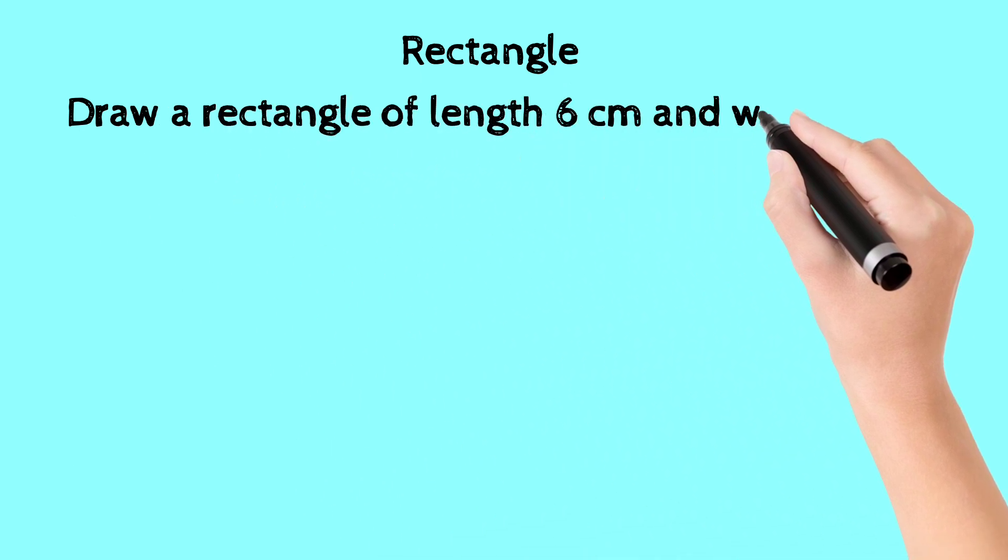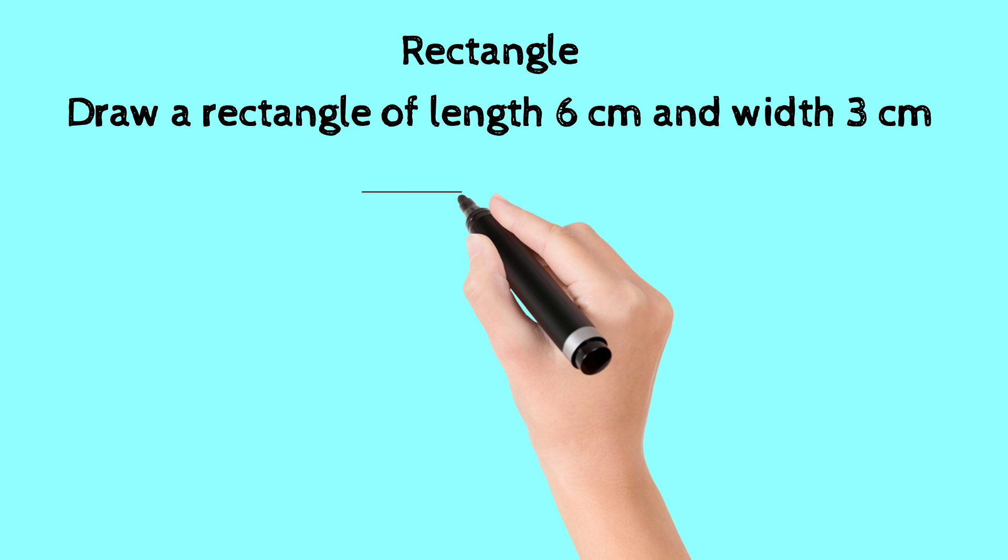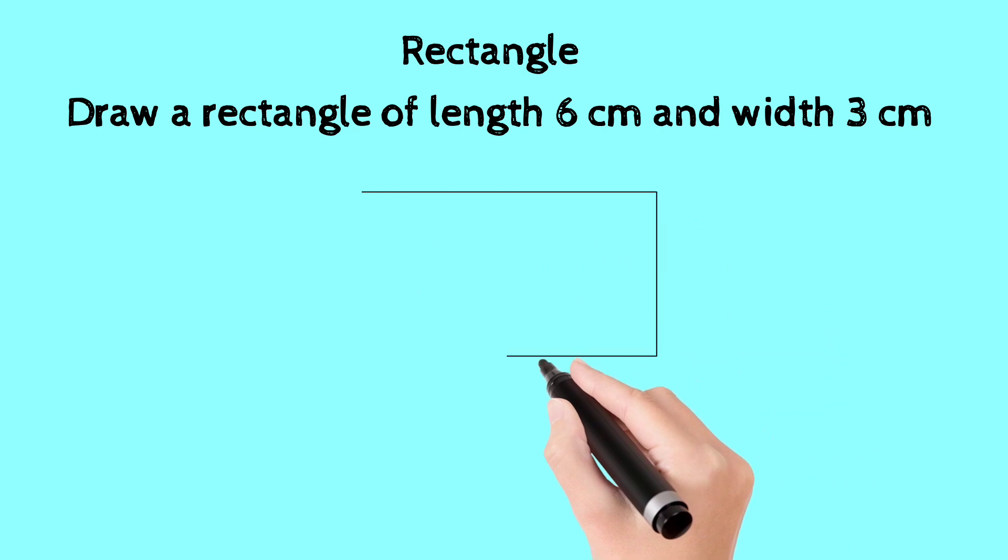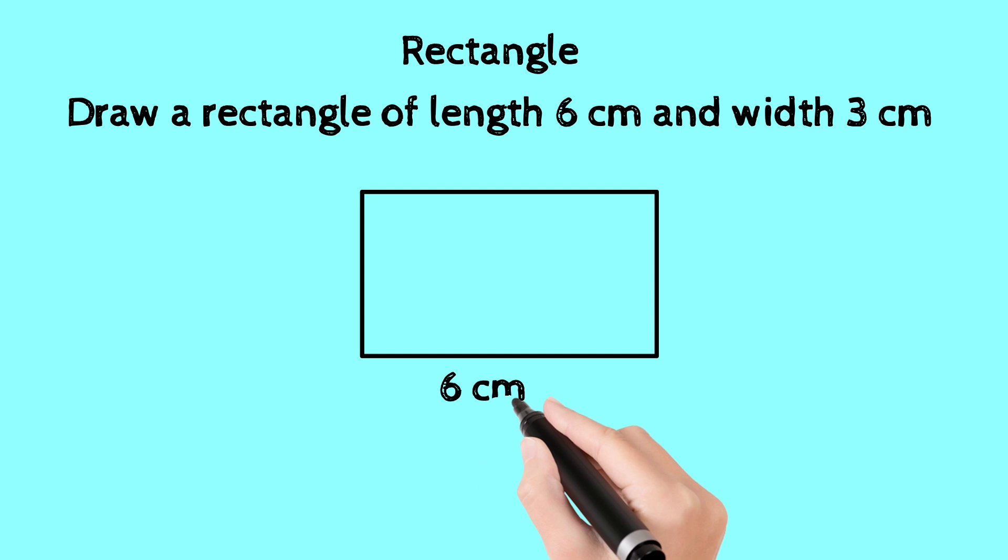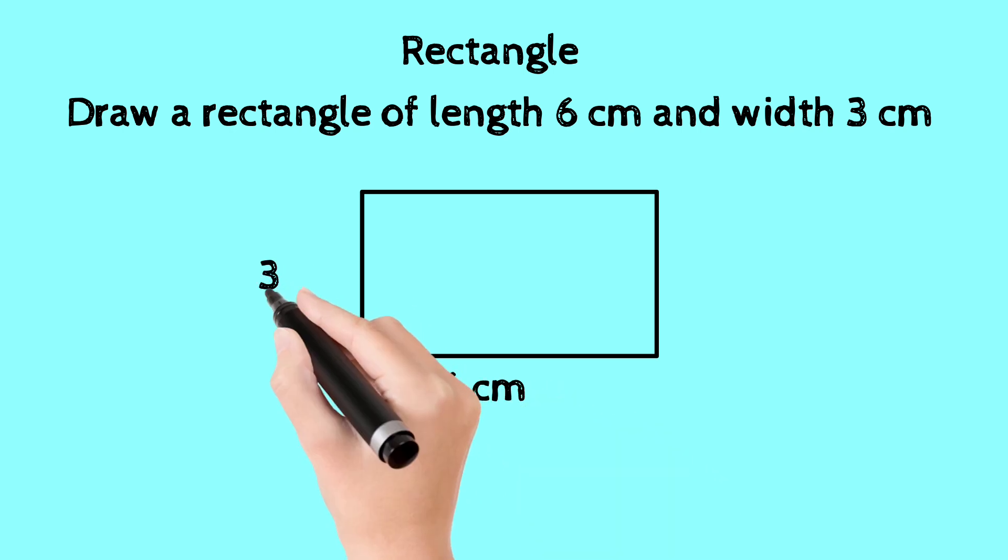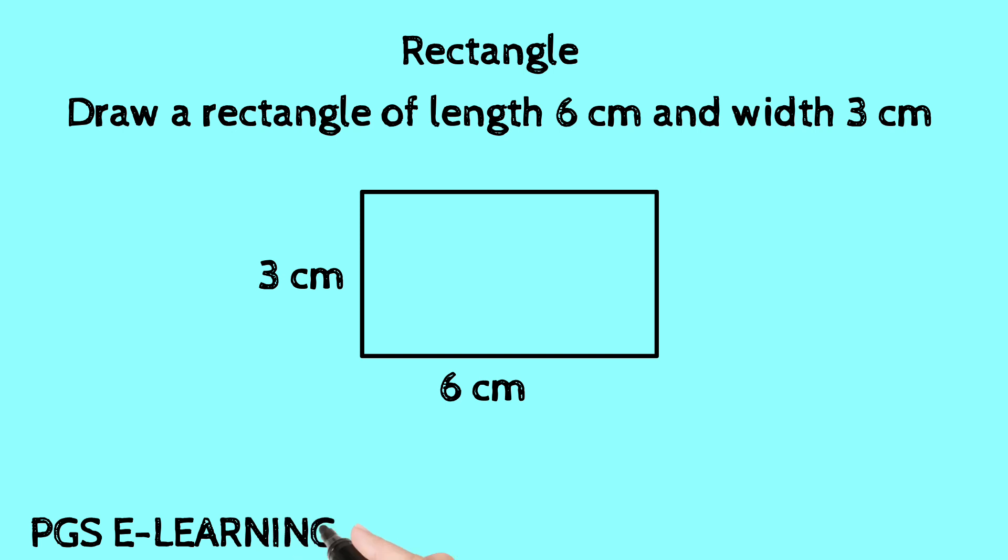Draw a rectangle of length 6 cm and width 3 cm. See this diagram: its length is 6 cm shown horizontally, and width is 3 cm shown vertically.